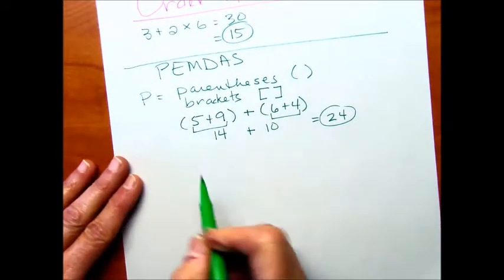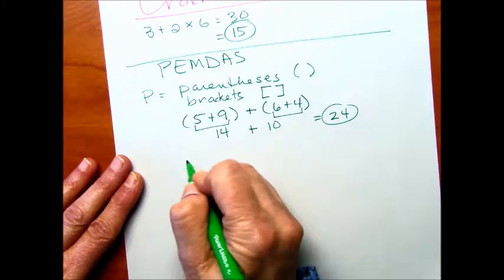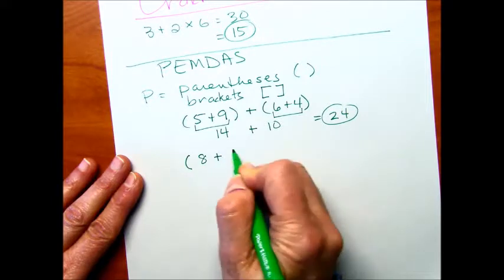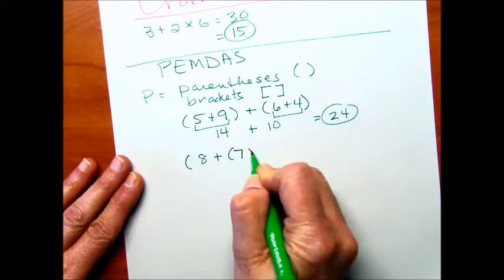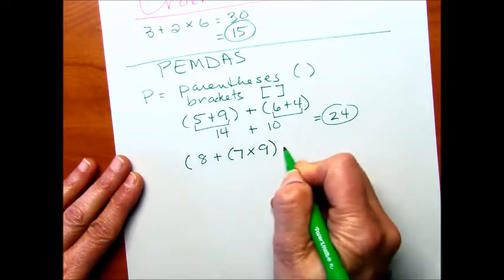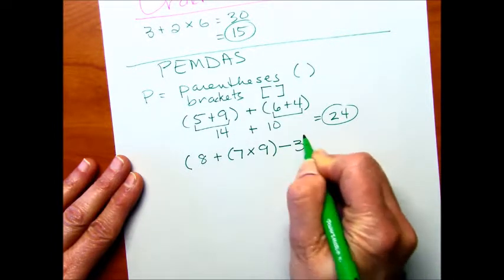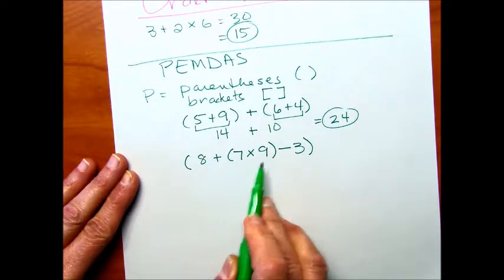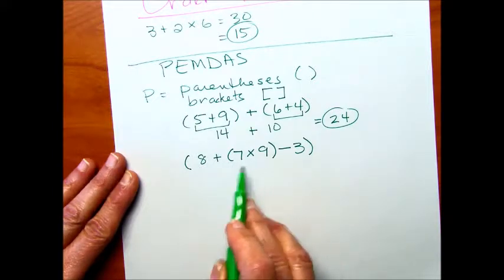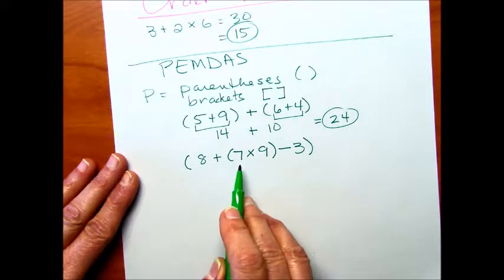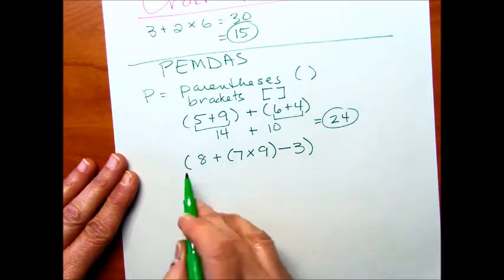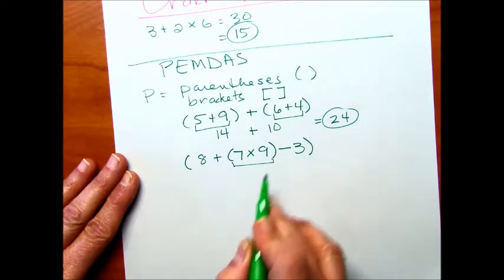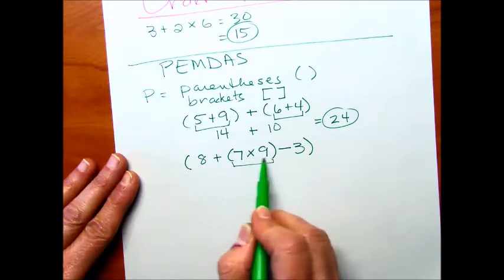Let's do another example where you might see parentheses. We'll have an open parentheses 8 plus and then another set of parentheses inside. And sometimes that happens, you'll find parentheses within parentheses. In this case, whenever you have more than one set of parentheses or a set within a set, always work from the inside and then work your way out. So before I add this quantity to the 8 and then subtract from it, I'm going to multiply what's inside here.